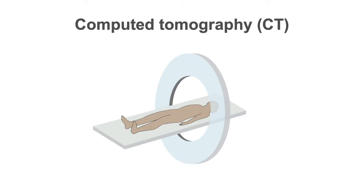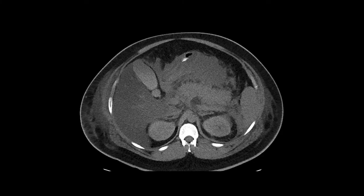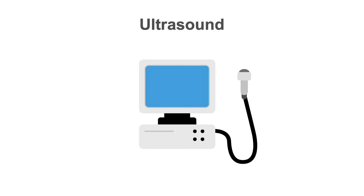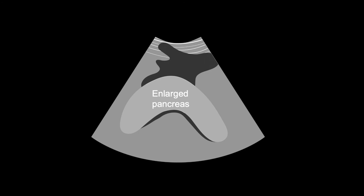What about imaging? Contrast-enhanced abdominal CT is the imaging modality of choice. Findings positive for pancreatitis include edema, enlargement, and inflammation of the pancreas. Free fluid or ascites may also be seen. This is an axial image of a CT scan of the abdomen and pelvis — not contrast-enhanced — but still shows findings consistent with acute pancreatitis. You can see the irregularly shaped pancreas with edema surrounding the pancreatic head, inflammation of the pancreas, and free fluid in the upper abdomen. Abdominal ultrasound can also be used to diagnose pancreatitis. In patients with acute pancreatitis, the pancreas appears diffusely enlarged and hypoechoic on abdominal ultrasound. There may be peripancreatic fluid seen from third spacing. Gallstones may also be visualized in the gallbladder or the biliary ducts.